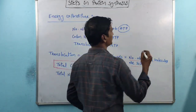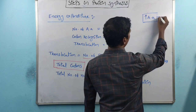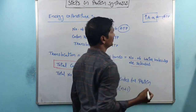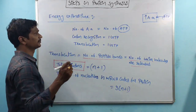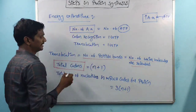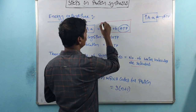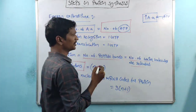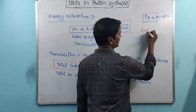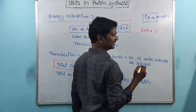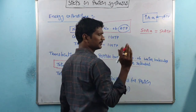The first step is the activation of amino acids, which requires energy supplied in the form of ATP. Each amino acid activation requires one ATP, so the number of amino acids equals the number of ATP molecules used. For example, if a polypeptide chain contains 50 amino acids, then 50 ATP are utilized.